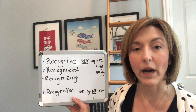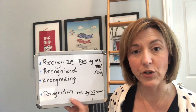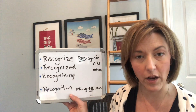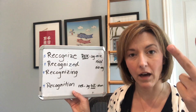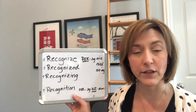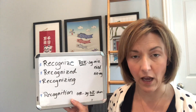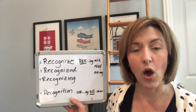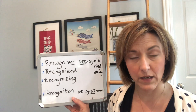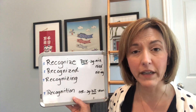For 'recognizing,' when you add -ing it actually adds another beat to the word. So you have four beats: rec-o-g-ni-zing. Again, syllable number one is stressed: rec. Recognizing, recognizing, recognizing.